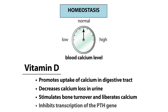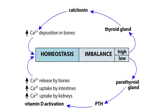Vitamin D also acts on parathyroid cells to inhibit the transcription of the PTH gene, thus forming a negative feedback loop for the regulation of PTH. Overall, the concentration of calcium in the blood is tightly regulated by the combined action of calcitonin, PTH, and vitamin D.